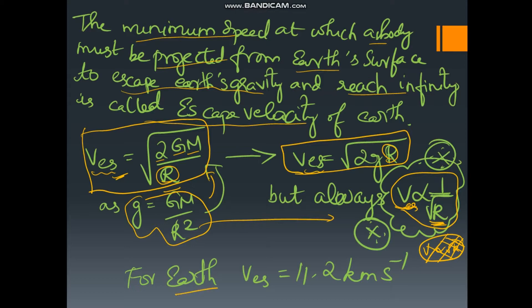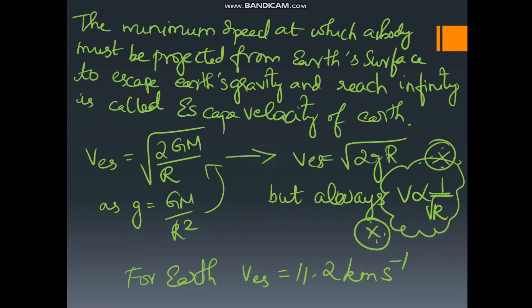For Earth, the escape velocity is 11.2 km per second. So if you throw an object with a speed of 11.2 kilometres per second from the surface of the Earth, it will escape the Earth's gravity and reach an infinite point in space.